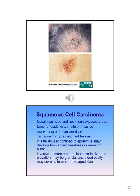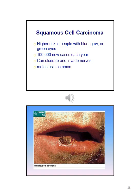Squamous cell carcinoma is usually on the head and neck and is a tumor of the epidermis, either in situ or invasive. It is more malignant than basal cell. It can arise from pre-malignant lesions. In situ is usually confined to the epidermis and may develop from actinic keratosis or areas of burns. The invasive form includes tumors that are firm, increase in size, elevated, granular, and bleed easily. It may develop from sun-damaged skin. People with blue, gray, or green eyes are at higher risk. There are approximately 100,000 new cases each year. This type can ulcerate, invade nerves, and metastasis is common.